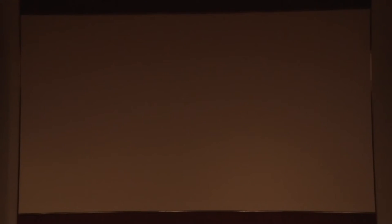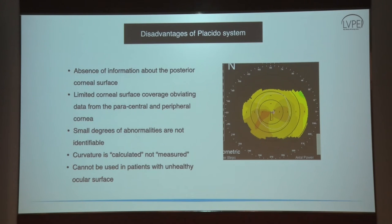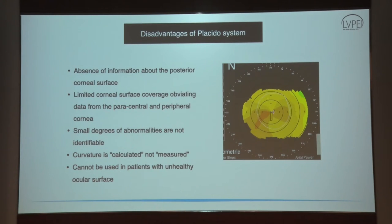There are certain disadvantages of a Placido system. First, because it is reflection-based, the posterior surface of the cornea is not taken into account — only the anterior surface. Second, the central and paracentral cornea is not fully covered, and peripheral data can be lost due to shadows from the lid margin or eyelashes. Small degrees of abnormalities are not identifiable because the distance between rings is what calculates keratometry values. The curvature is derived using an algorithm, not directly measured. Finally, a healthy ocular surface is needed for a good image.